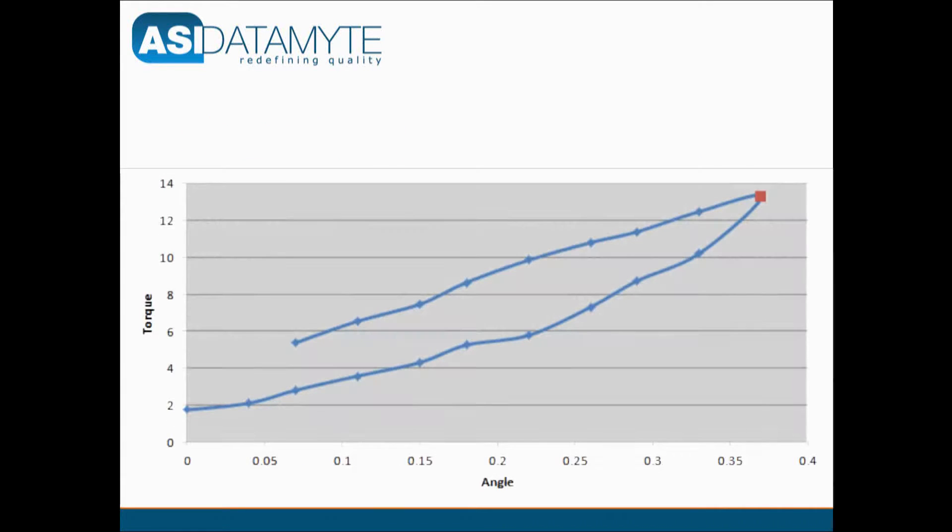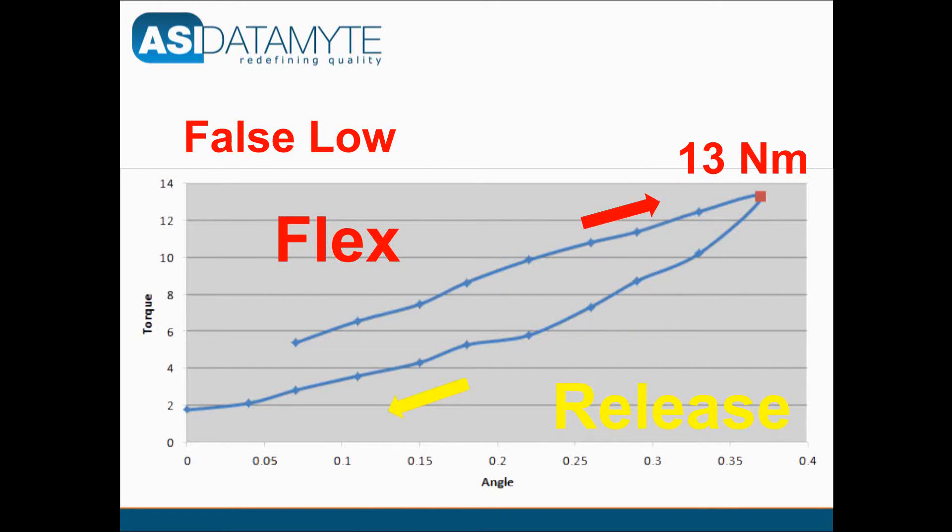This curve shows how premature wrench release can generate a false low peak reading. The red square shows the peak value recorded. Note that the curve shows only flex and release but with no fastener rotation.